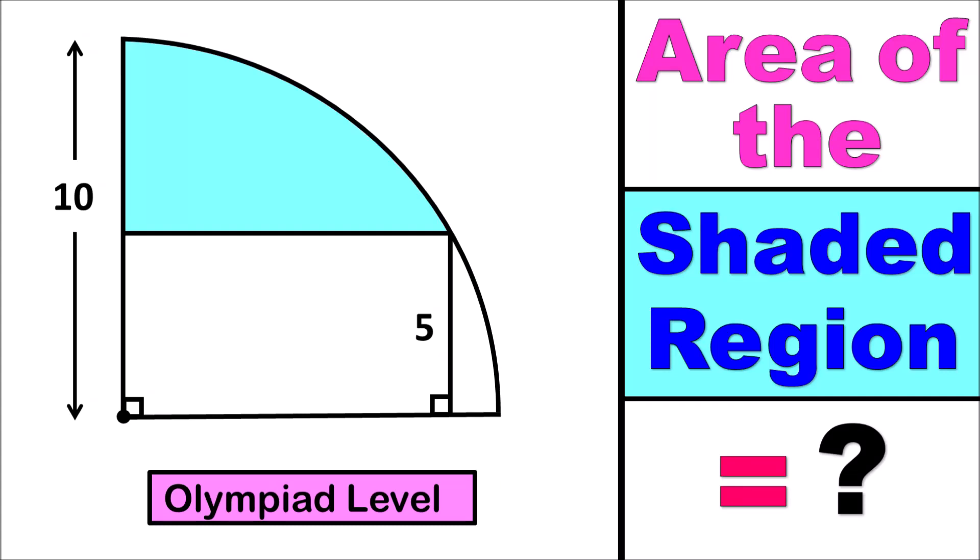In this problem, let us try to find out the area of the shaded region of a sector. The measurement of the radius of the sector is 10 units. There is a horizontal and a vertical line drawn within the sector. The measurement of the vertical line is 5 units, and the measurement of the horizontal line is not known. These lines are making angles of 90 degrees with the radius of the sector.